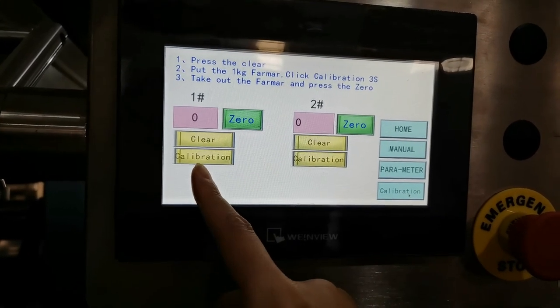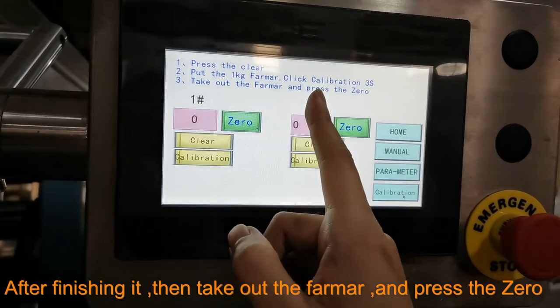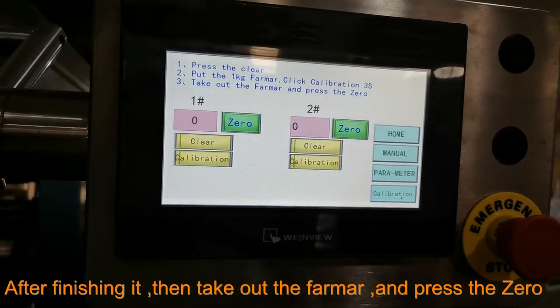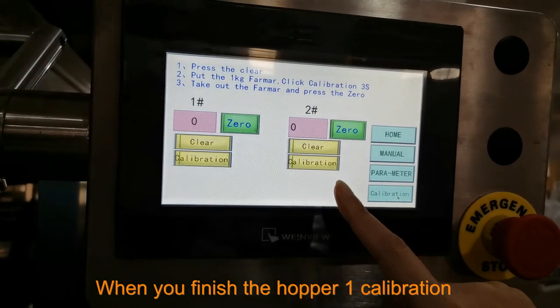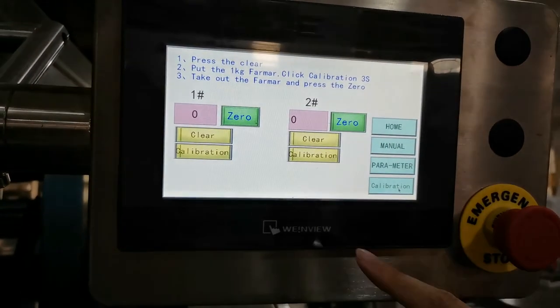Then press calibration. After finishing it, take out the format and press zero. Then finish one hopper and follow the steps to do the other. Then it goes off. Okay, thank you.